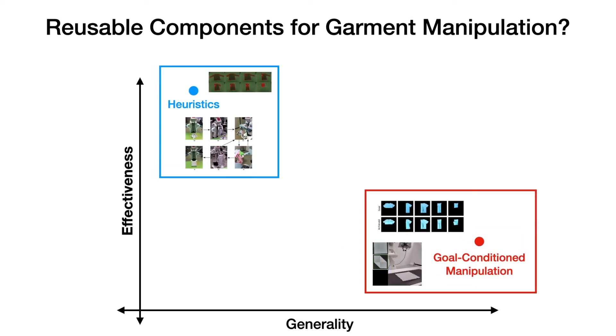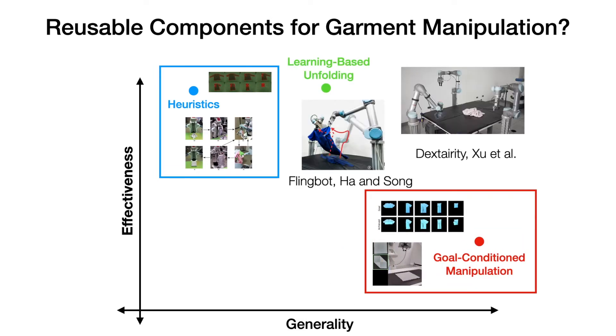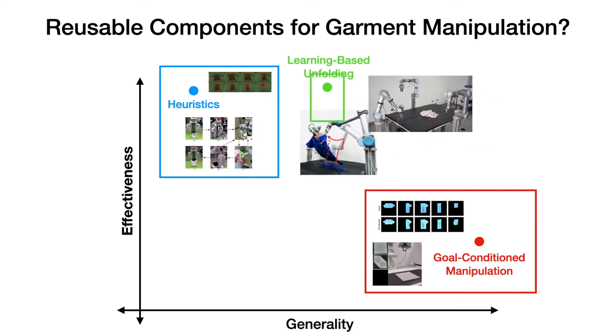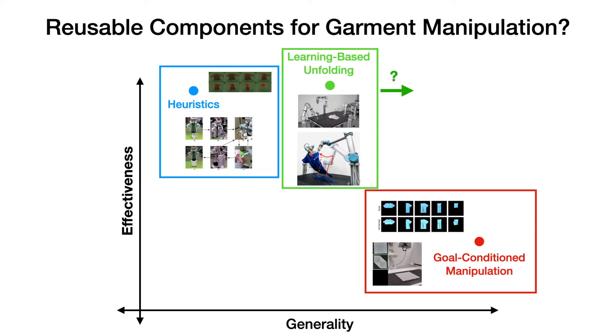In a step towards the right direction, we have learning-based unfolding, which has been motivated as a task-agnostic first step for garment manipulation. But it turns out we can impose even more structure into a garment than naively increasing its coverage.